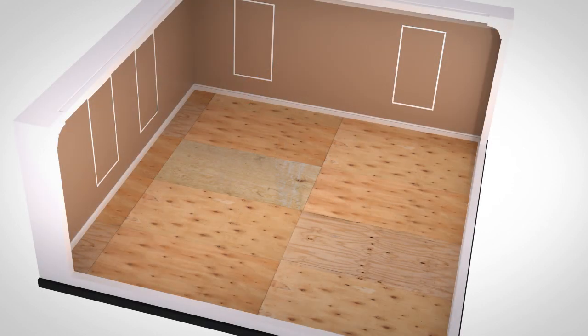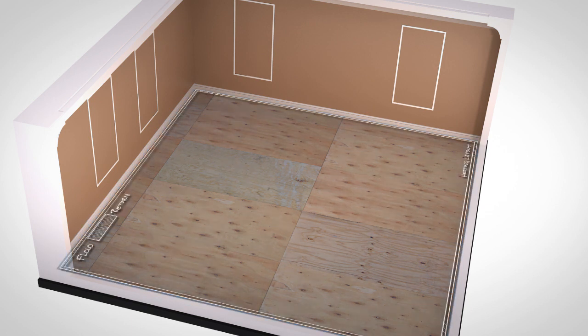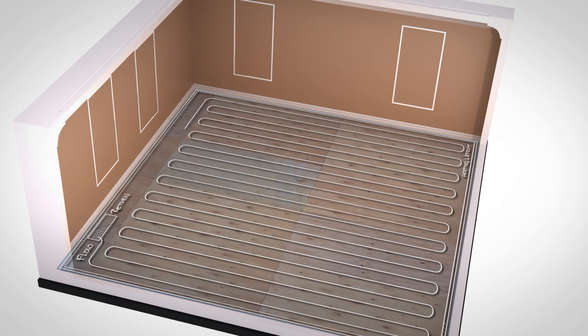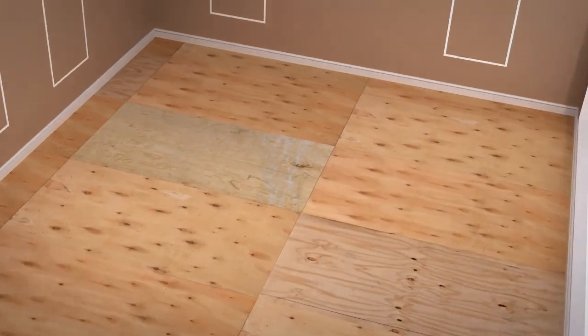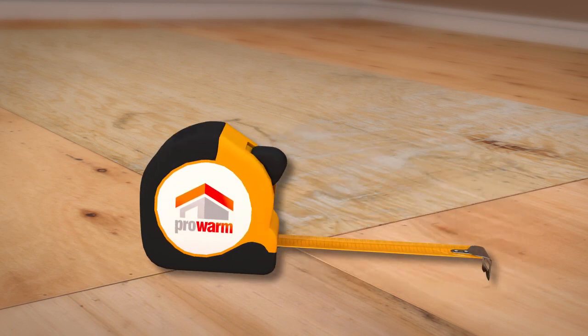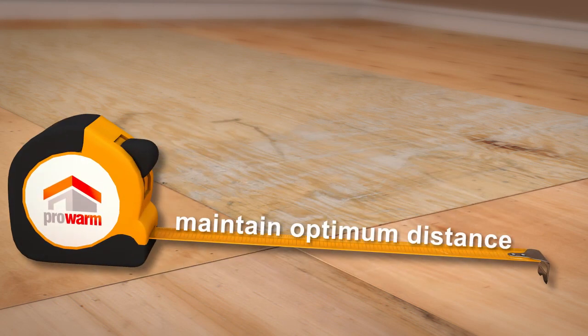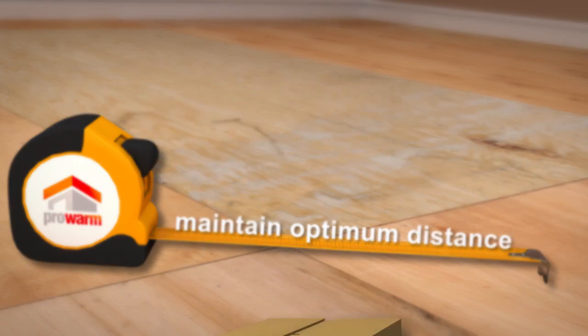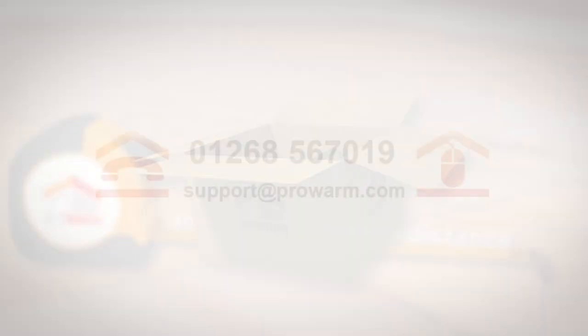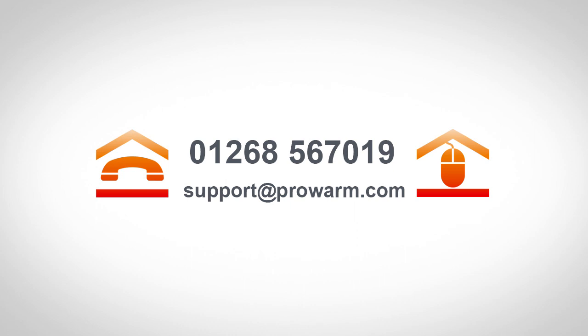You are now ready to begin installation of the ProWarm Overlay Heating Panel. Before beginning the installation of the heating pipe, create a plan of how the pipe will be laid, ensuring you record where it will lie, bend, and that the pipes maintain the optimum distance for your system as stated in the guide. Your installation pack may have been supplied with an example diagram. If you are in any doubt, contact our Technical Support Centre for advice on 01268 567 019.